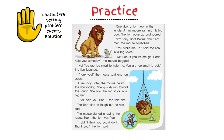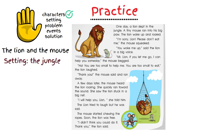Now let's go through the five finger retelling process. The characters in the story are the lion and the mouse. The setting, which is the place, was the jungle. The problem is that the lion got caught in the net and needed help.